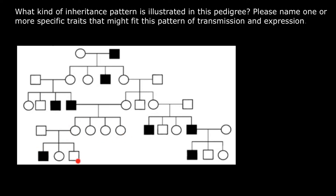But again, in the next generation, only males are affected. We can explain this pattern if we suggest that this is an X-linked recessive genetic disorder. The genotype of this male on top is going to be a defective X chromosome and a normal Y chromosome, and the genotype of the female is also going to be a defective X chromosome and a normal X chromosome.